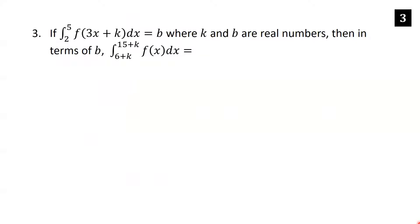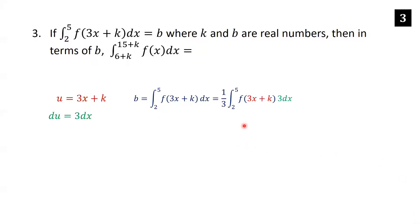If the integral from 2 to 5 of f(3x + k) dx equals b, where k and b are real numbers, find the integral from (6+k) to (15+k) of f(x) dx in terms of b. We do a formal substitution: let u equal 3x plus k, then du equals 3 dx. We need a 3 with the dx to replace it with du, so we put in the 3 and pull out a one-third.